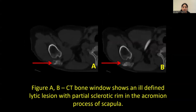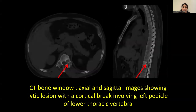CT bone window shows an ill-defined lytic lesion with partial sclerotic rim in the acromion process of the scapula. CT bone window also revealed axial and sagittal images showing a lytic lesion with a cortical break involving the left vertebral body of a lower thoracic vertebra.